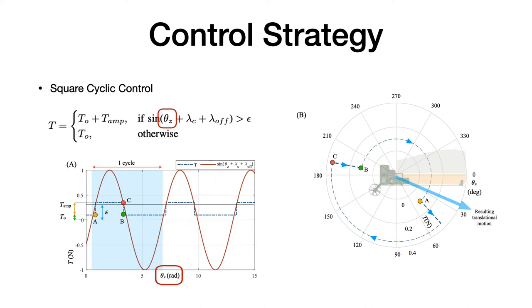Theta Z is the heading angle of the platform, so this value is constantly increasing. Lambda C is the desired direction of movement. And lambda off is the value adjusted to compensate for any gyroscopic effects.